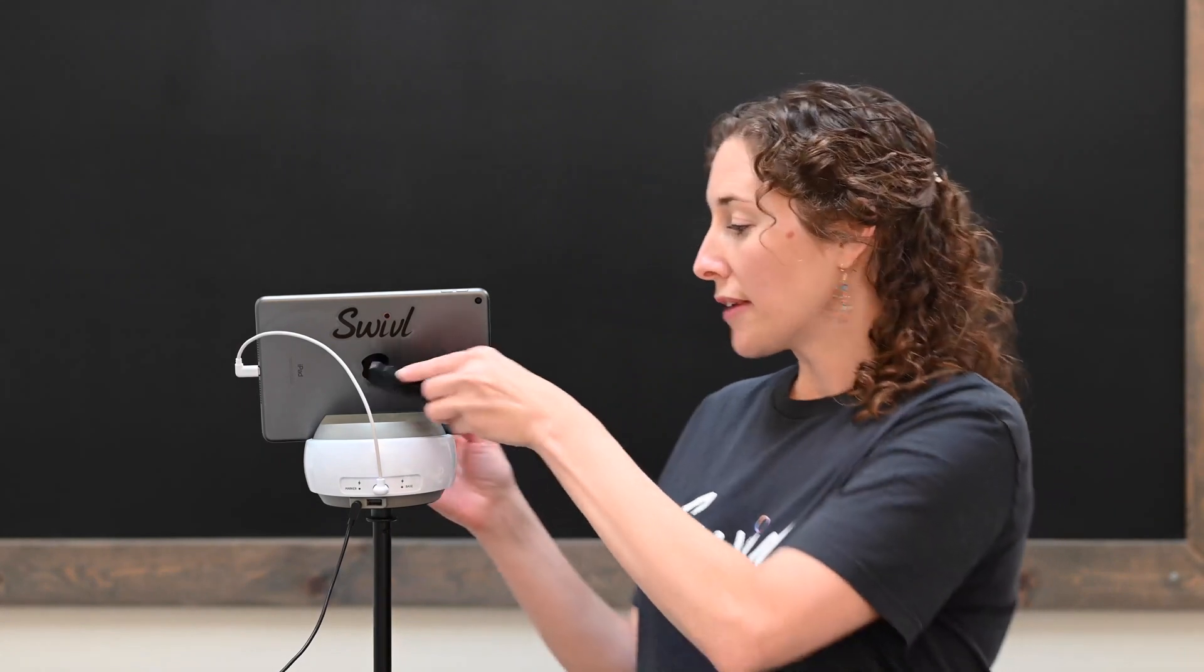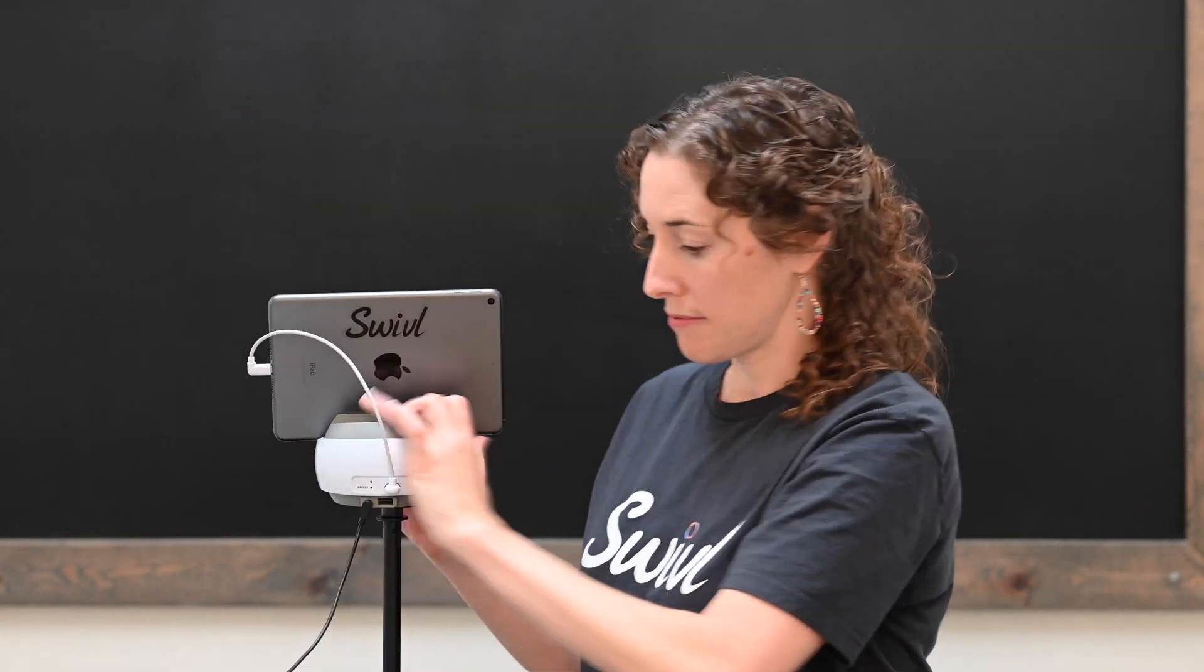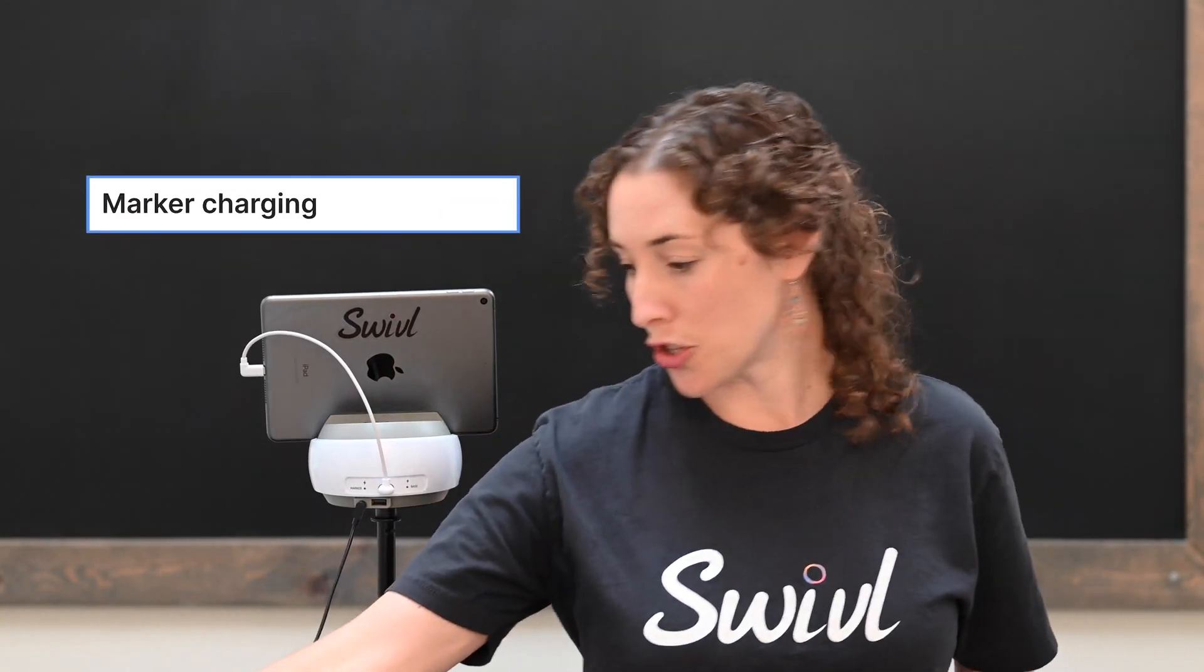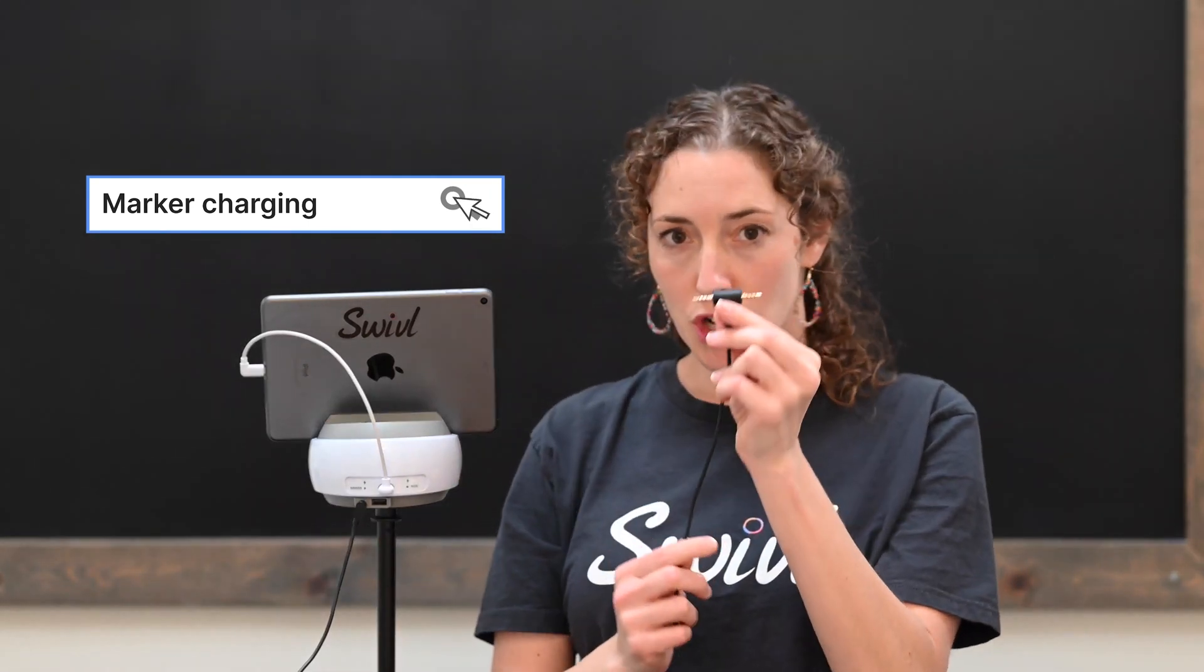Now let's talk about charging markers. One marker will charge while being docked in the robot base. If your robot came with additional markers, you will also receive the marker charging cable. Simply plug the markers onto either side of the charging cable and connect this to your charging block. If you have a CX robot and it is plugged in, it will also charge your mobile device.